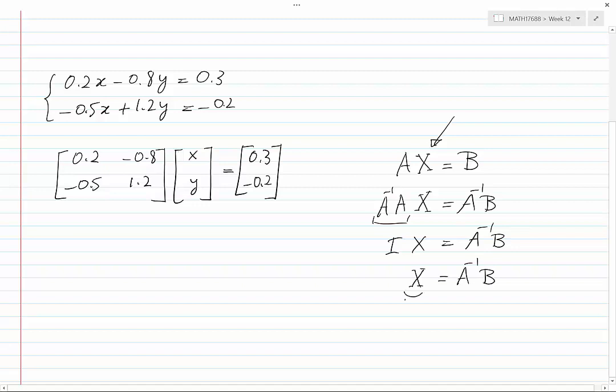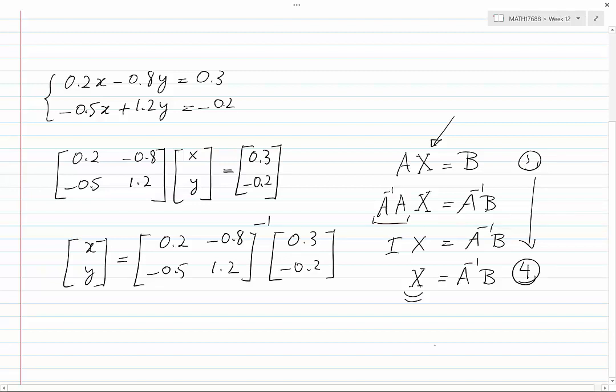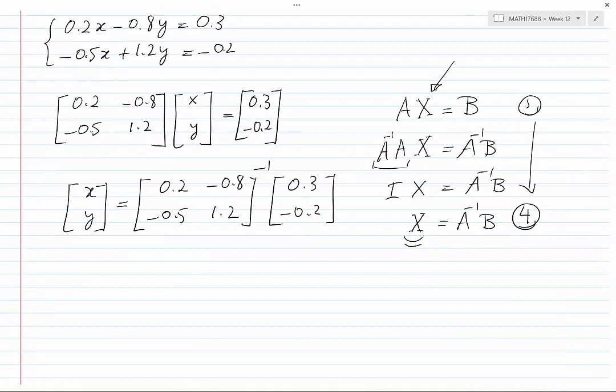If I apply the same procedure, I can see that the unknown, that is the vector x and y, will be the inverse of the coefficient matrix times 0.3 and minus 0.2. So I jumped from, let's say, equation 1 straight to equation 4. We can always do that. Now if this inverse exists, we will have solutions. Otherwise we would have two possibilities: either an infinite number of solutions or no solutions.